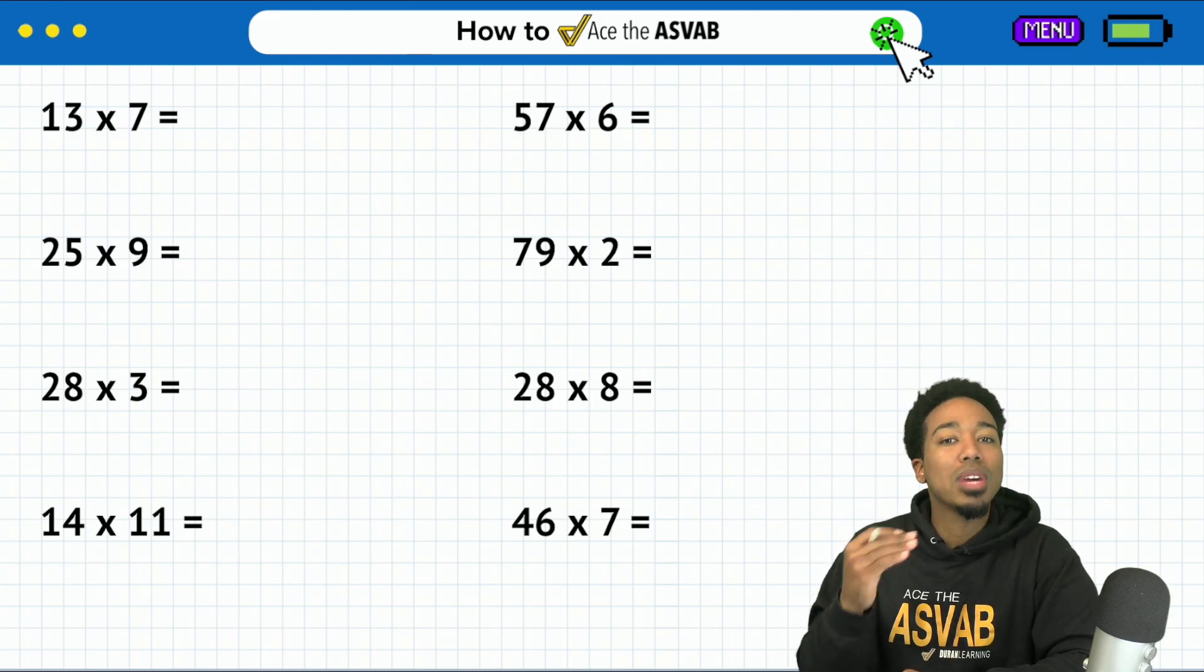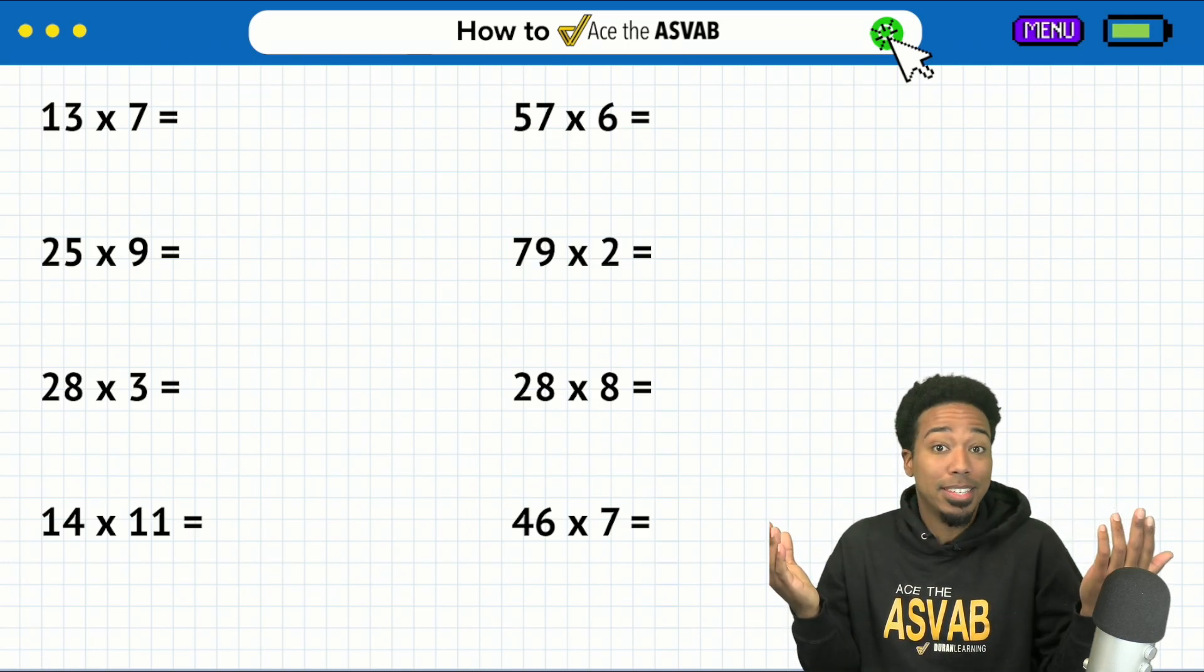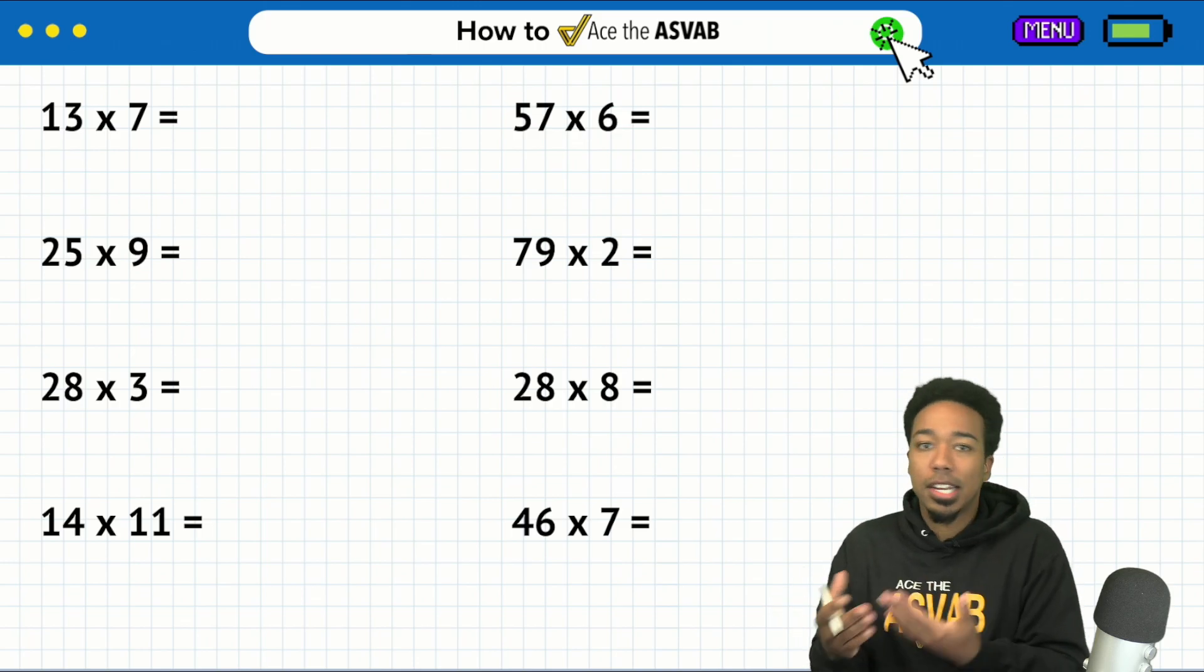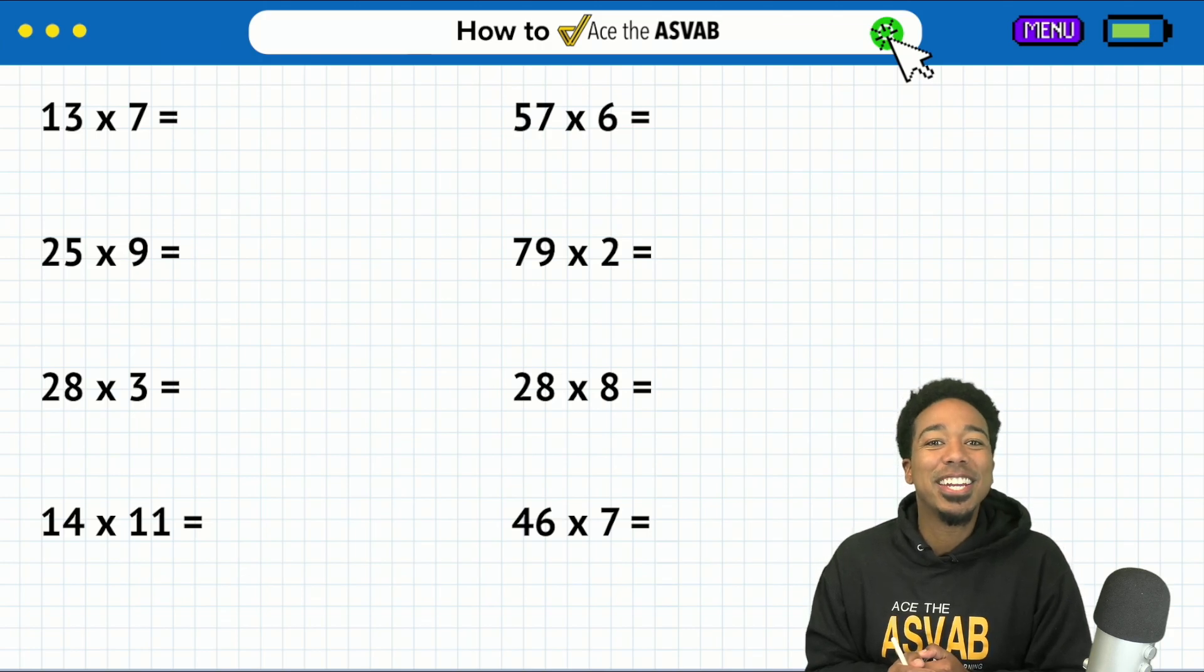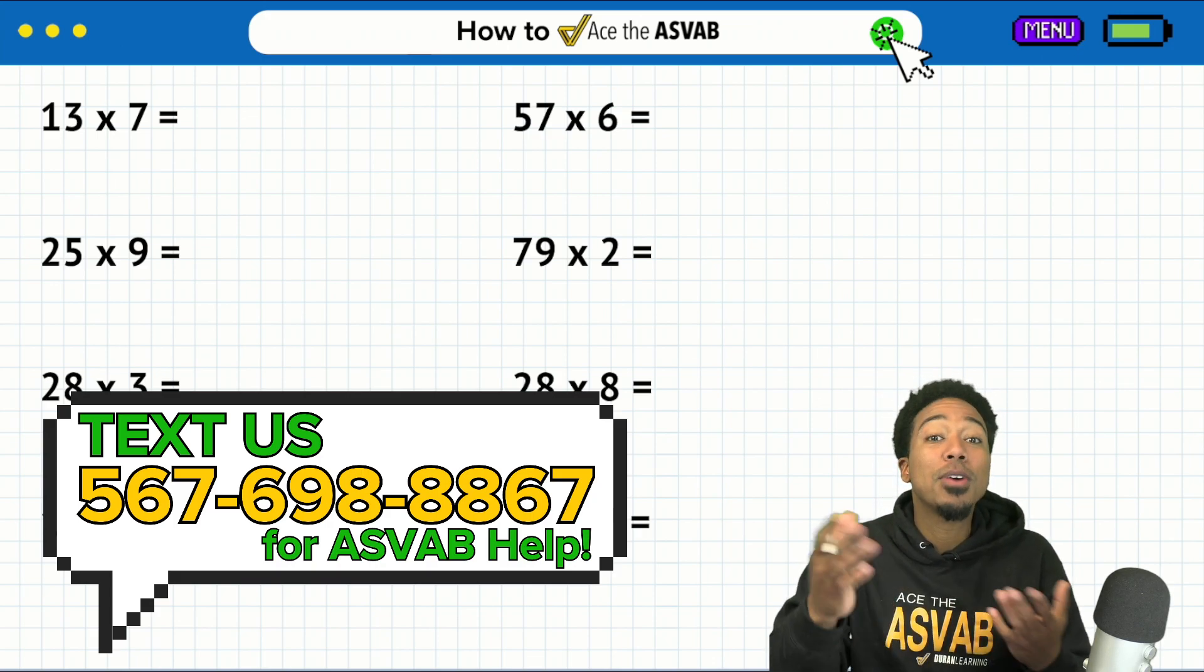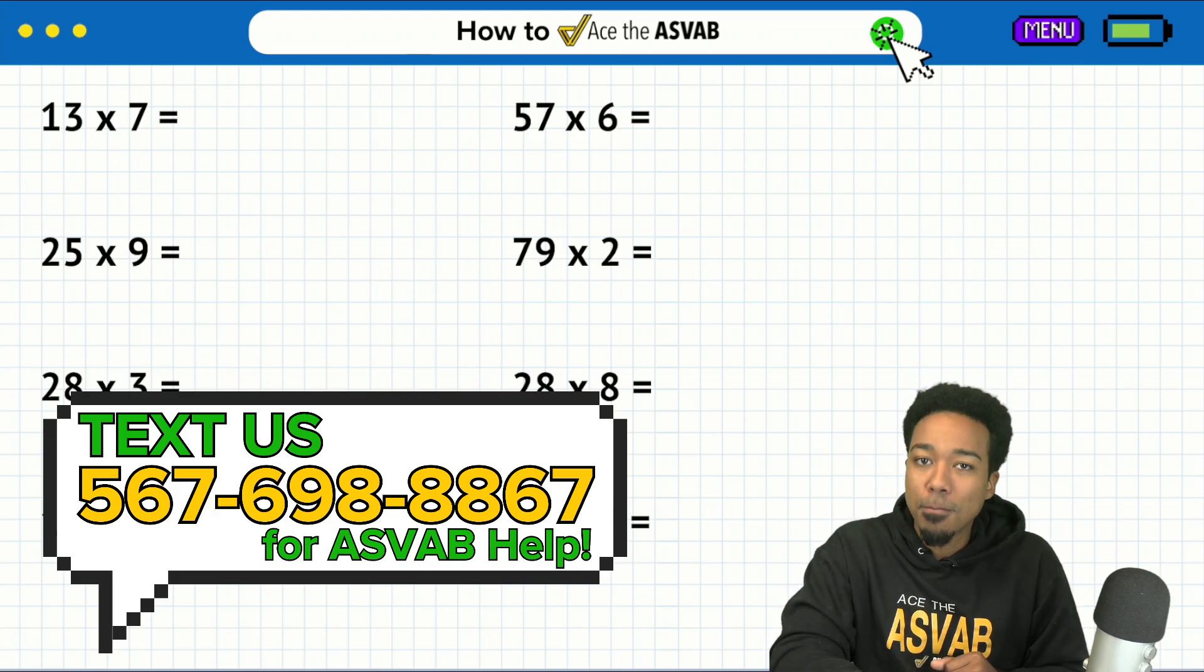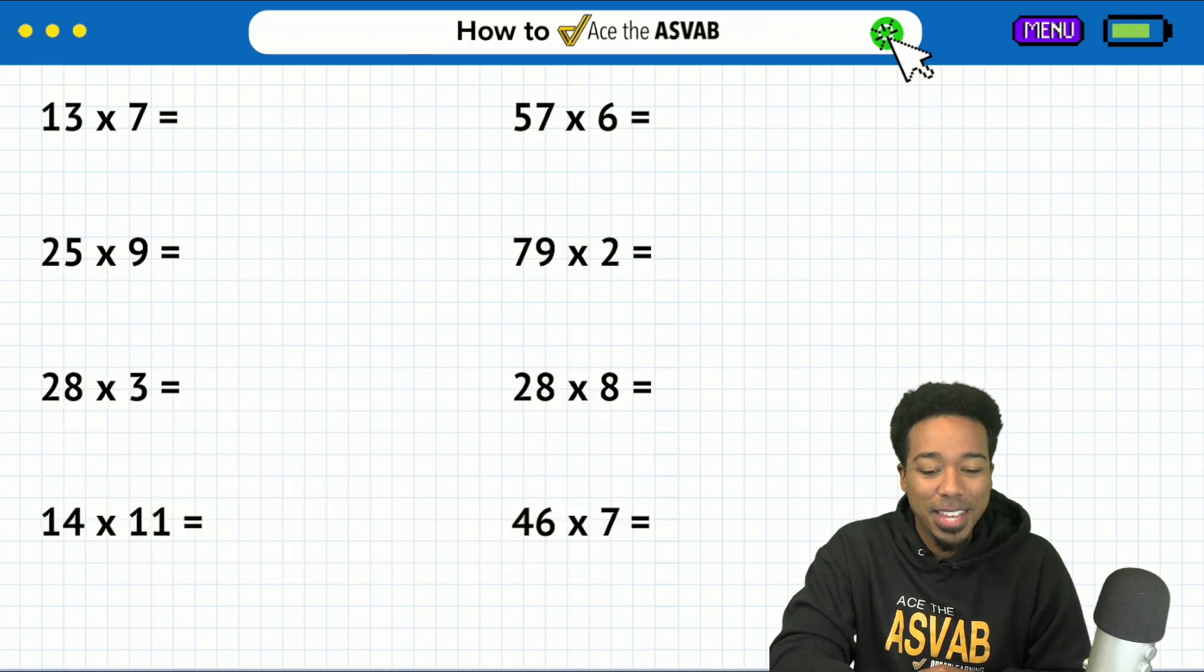If you need to write down, write down as little as possible because remember, the ASVAB is timed. The less time you take setting up a problem or writing things down or calculating, the better for you. If you want to join a free class, text us or check out the website. We have a free class once a week on Zoom, two hours each, and a free practice test with video solutions for every single one. It's all free—help yourself out, raise your score, and get that job you want.